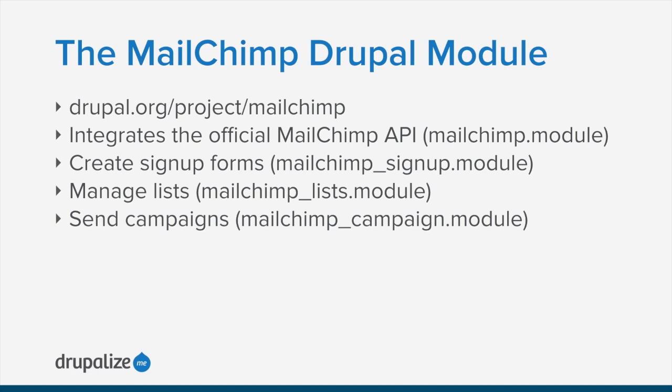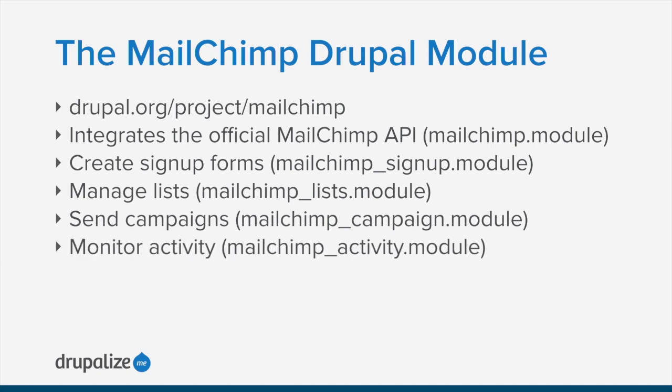The MailChimp campaigns module allows you to create and send email campaigns directly from Drupal, or to start a draft email campaign in Drupal and then finish it up using the MailChimp UI and send it from there. And finally, the MailChimp activity module can be used to display a tab on any entity with an email address, showing the subscribe, unsubscribe, and history of the email address in relation to your email list — effectively exposing some of the detailed metrics that MailChimp tracks for you directly within Drupal.